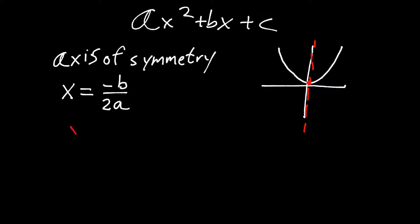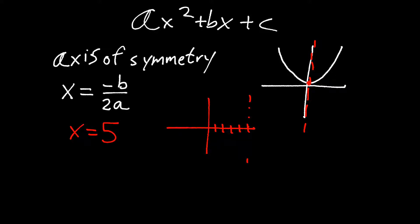So if the opposite of b divided by 2a turned out to be 5, we now have the equation for the line x equals 5, right here. This is our dashed axis of symmetry going through x equals 5. I didn't give a specific quadratic function, so I know nothing else about the graph, but I know that somewhere on this axis of symmetry, we have our graph being split into a left side and a right side.